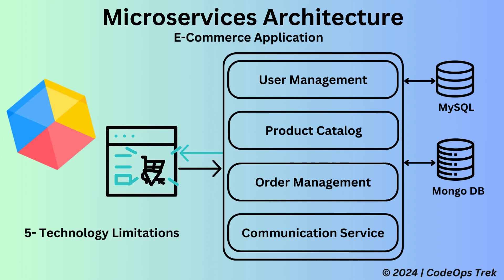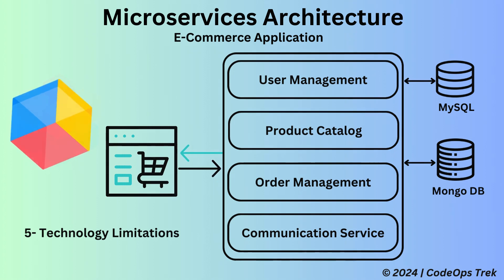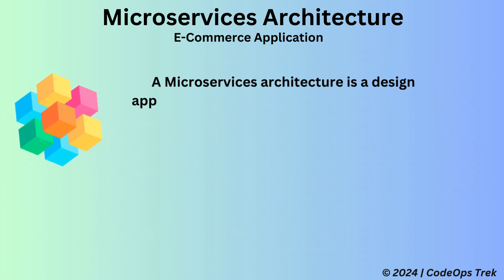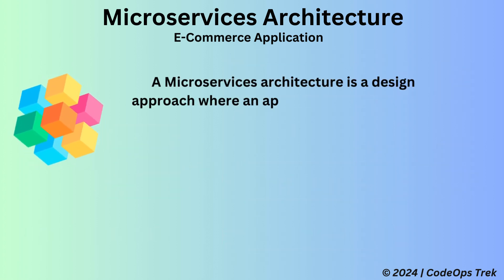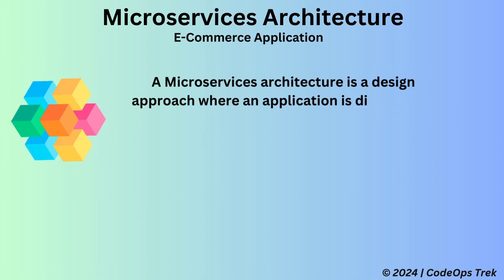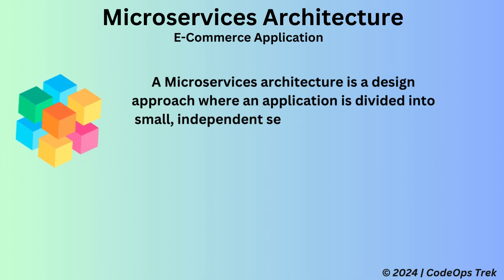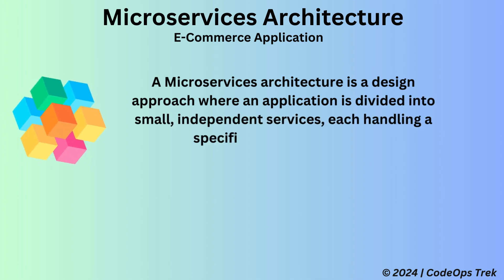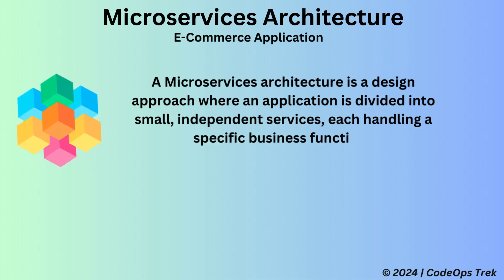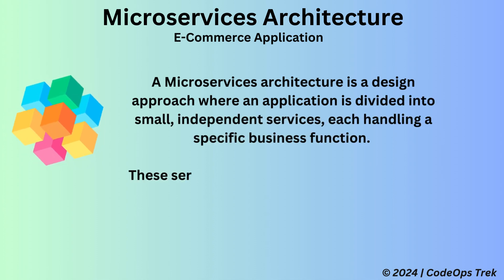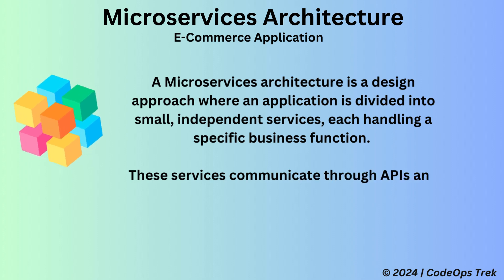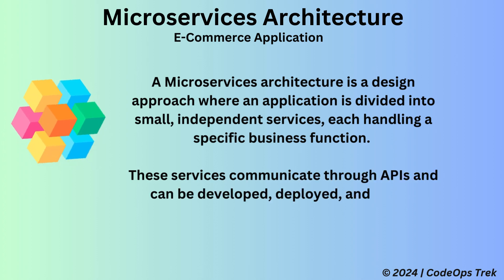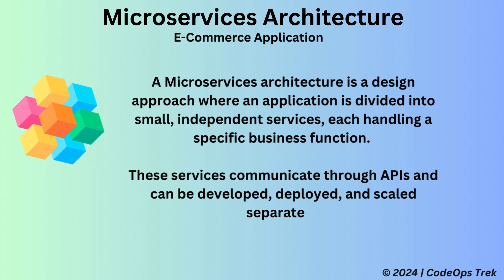So what is microservices architecture? A microservices architecture is a design approach where an application is divided into small, independent services, each handling a specific business function. These services communicate through APIs and can be developed, deployed, and scaled separately.